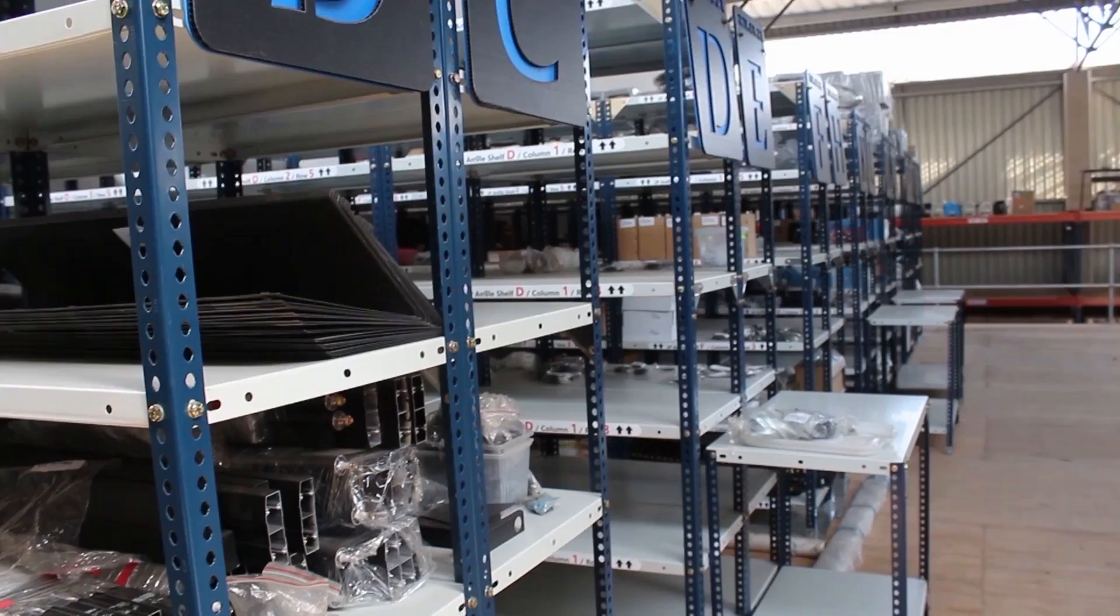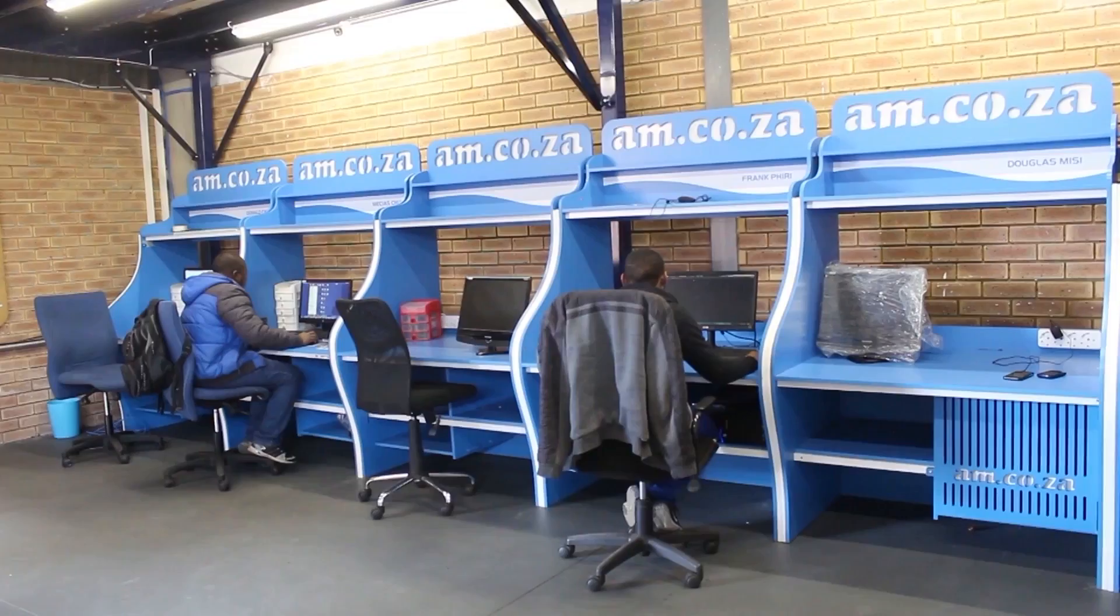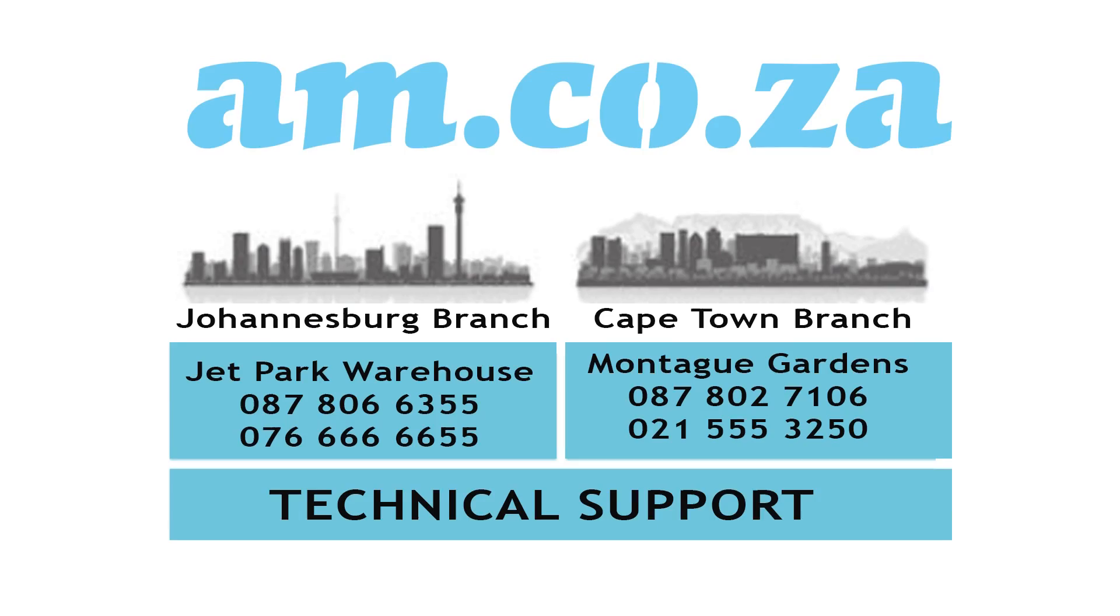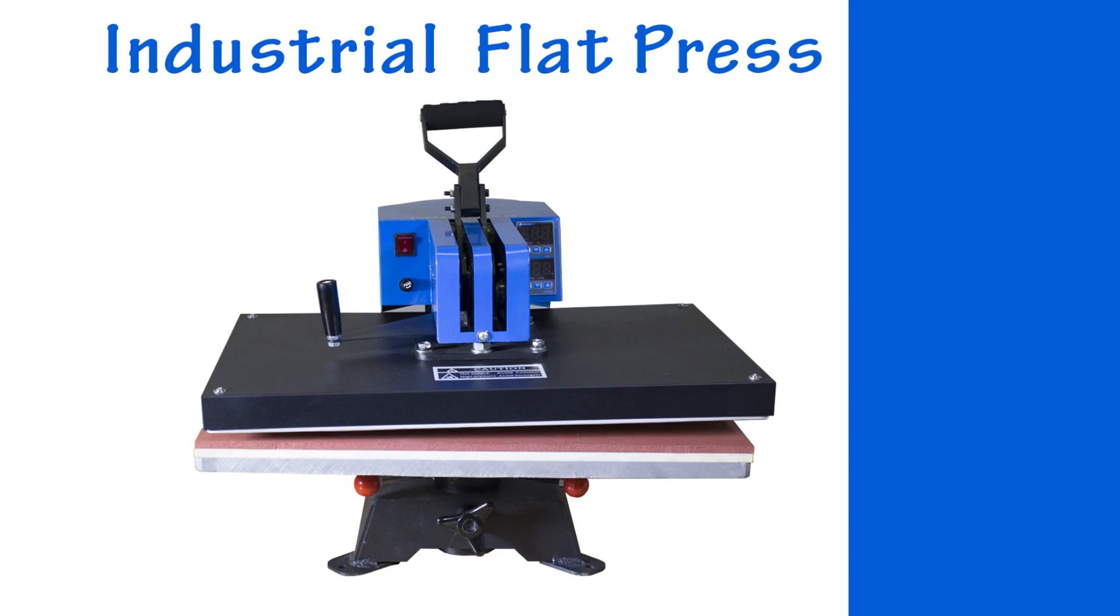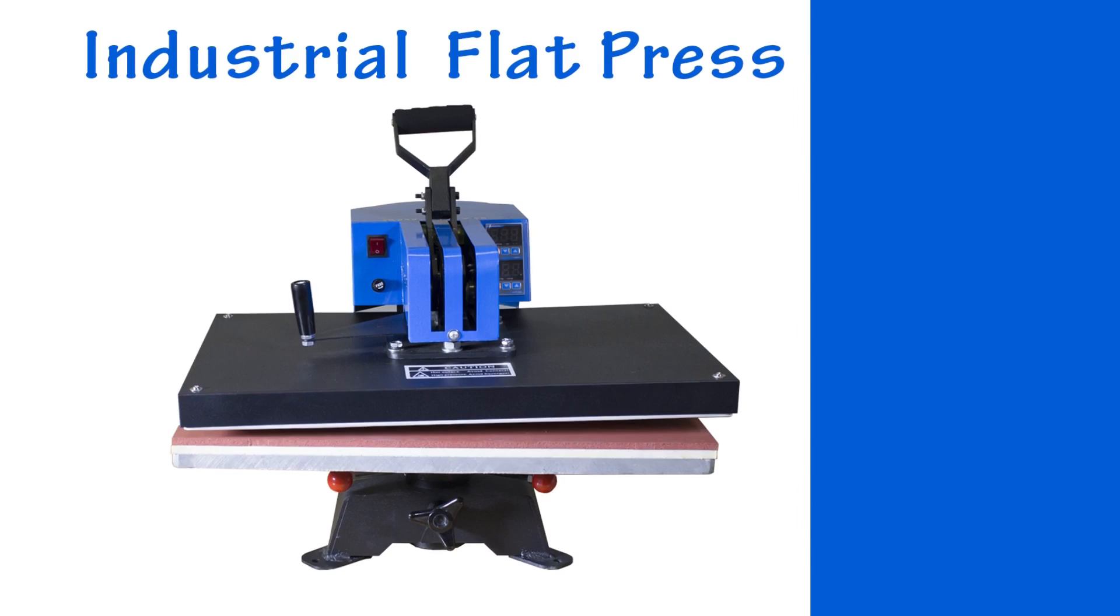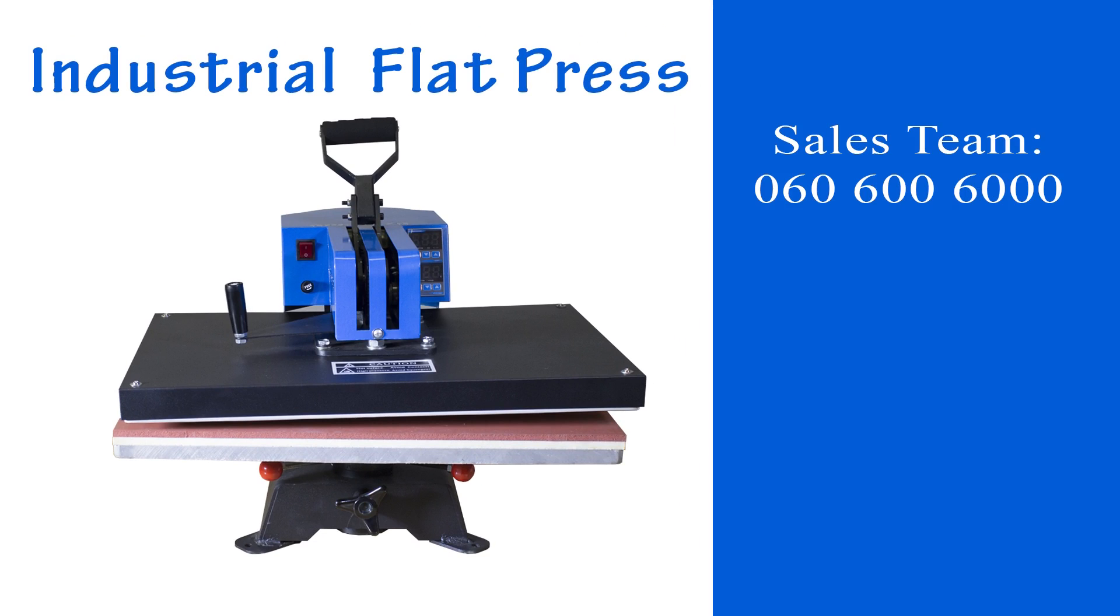Just like all machines sold by am.co.za, we stock spare parts for everything we sell and we also provide support from a dedicated support team which is available during all working days and is based in Johannesburg and Cape Town. For this industrial heat press, please call 060-600-6000 for our sales team or visit flatpress.co.za for this flat heat press machine or visit heatware.co.za for other heat press machines from us or visit am.co.za for all kinds of machines and services that we provide. Thank you for watching.